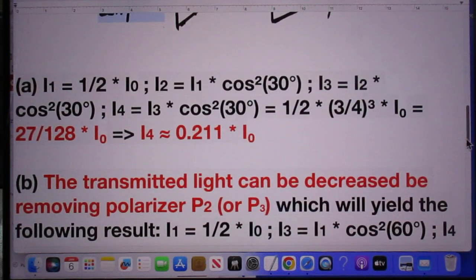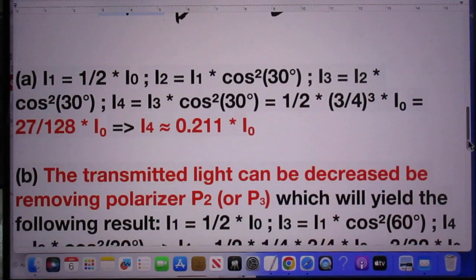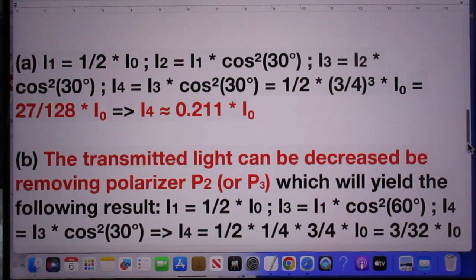So when unpolarized light goes through its first polarizer, the intensity that comes out he calls I1, which is one-half I₀.